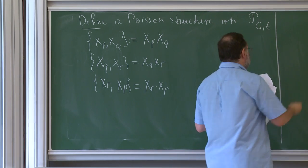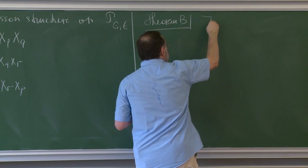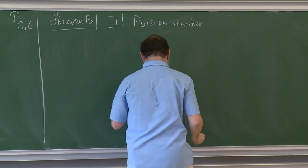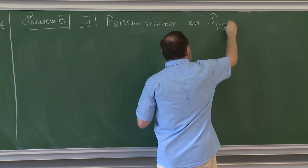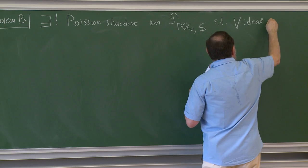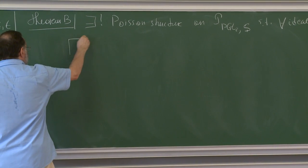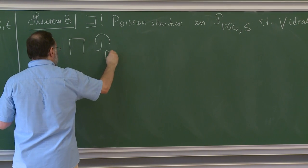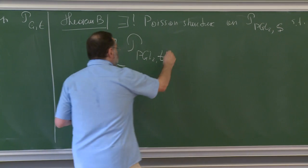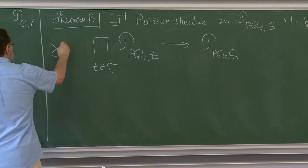This leads to Theorem B: there exists a unique Poisson structure on the moduli space P(PGL2, S) such that for any ideal triangulation tau of S, the gluing map gamma from the product of P(PGL2, T) over all triangles T down to P(PGL2, S) is a Poisson map.